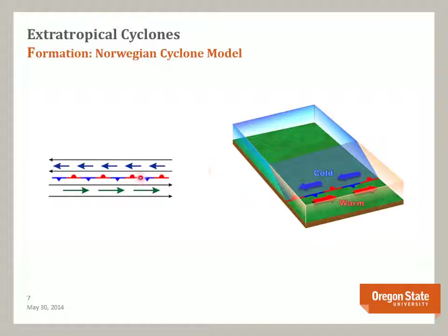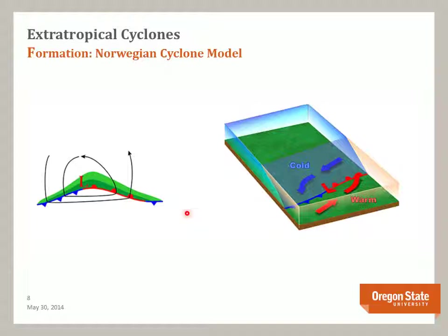In this model, there is initially a boundary, or front, separating warm air to the south from colder air to the north. This front is usually stationary. A wave on the front will form as an upper-level disturbance embedded in the jet stream moves over the front. The front develops a kink where the wave is developing, and precipitation will begin to develop, with the heaviest occurrence along the front, shown in the dark green areas.